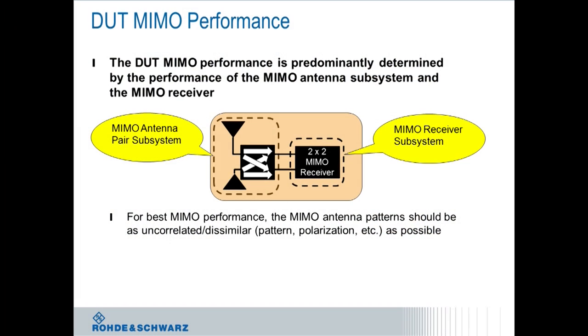I can try. Let's maybe just start right at the beginning where you look at LTE MIMO performance of a device under test. What is affecting good versus bad MIMO performance? In an LTE MIMO enabled device, you really have two key parameters: the MIMO antenna pair subsystem as well as the MIMO receiver subsystem.